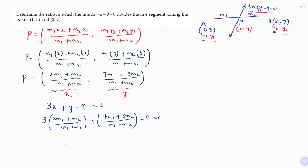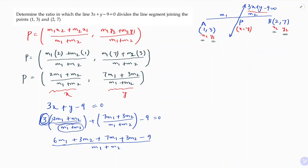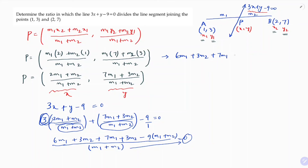Taking LCM as m1 plus m2, and multiplying through: 3 times 2m1 gives 6m1, and 3 times m2 gives 3m2. So the numerator becomes 6m1 plus 3m2 plus 7m1 plus 3m2 minus 9 times (m1 plus m2) equals 0. Cross-multiplying, (m1 plus m2) into 0 gives 0.